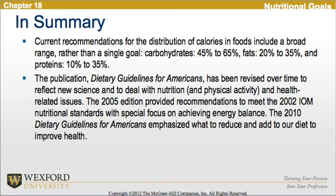In summary, current recommendations for the distribution of calories include a broad range rather than a single goal: carbohydrates 45 to 65%, fats 20 to 35%, and proteins 10 to 35%. The Dietary Guidelines for Americans has been revised over time. The 2005 edition focused on achieving energy balance, while the 2010 edition emphasized what to reduce and add to our diet to improve health.